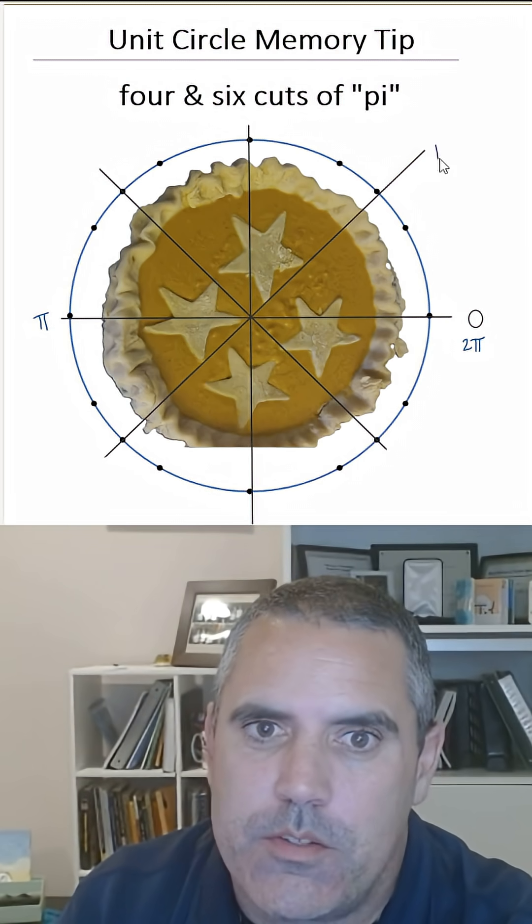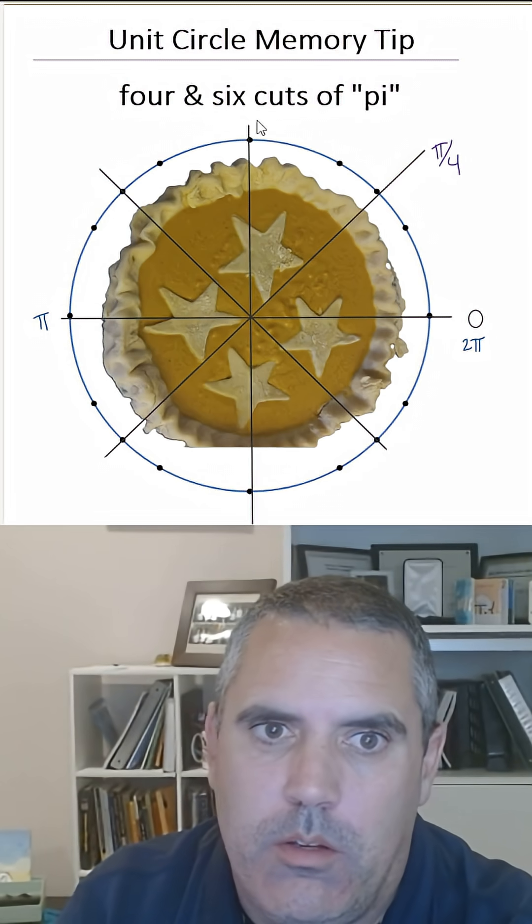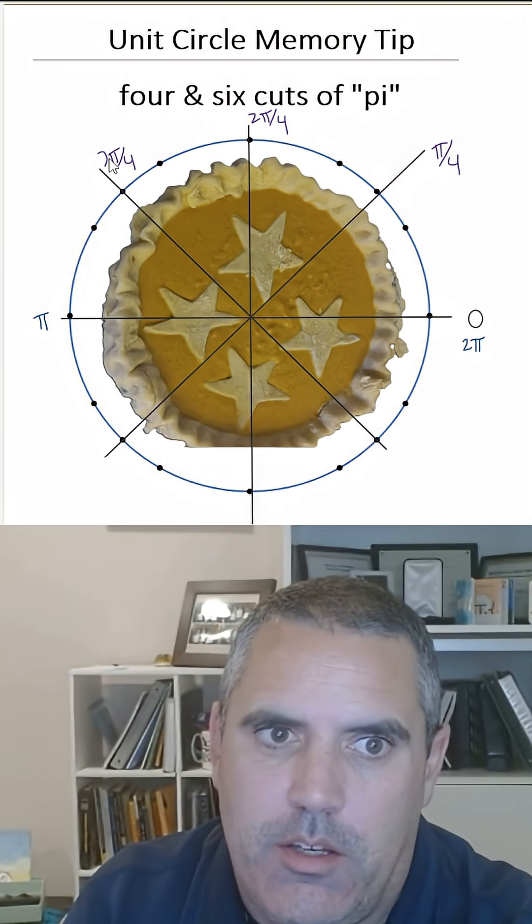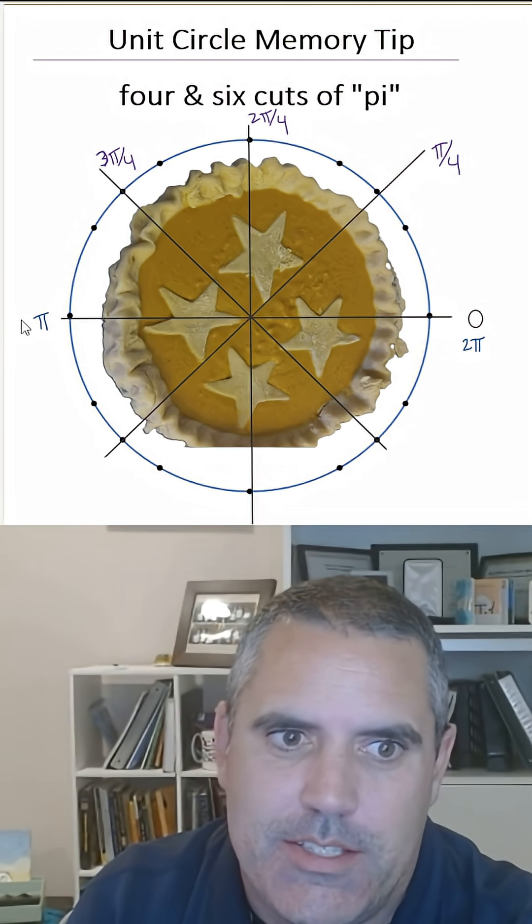We're just going to cut it into 4s. We're going to do π/4. We're going to do 2π/4. We're going to do 3π/4. And you're going to say, hold on, he just wrote 2π/4. Yes, I did. That was on purpose.